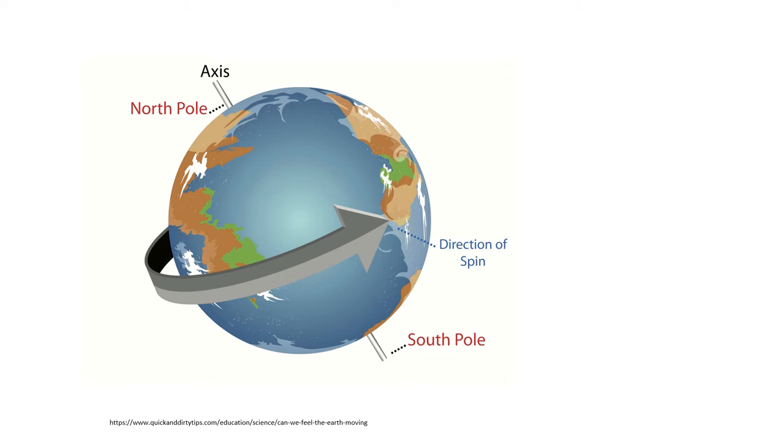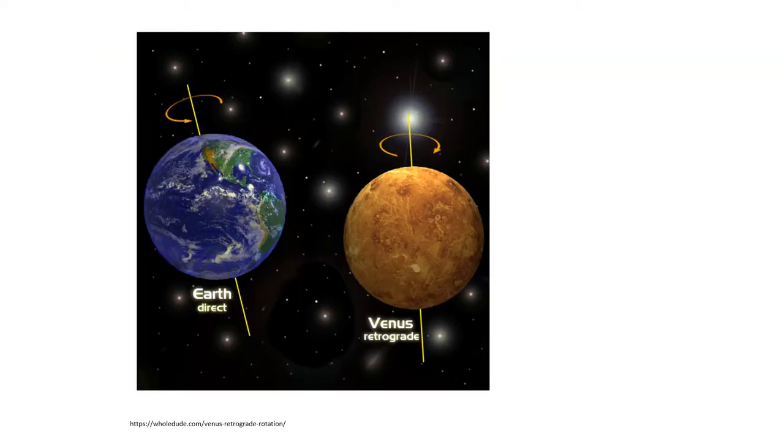Now, this is not a necessary thing. It just happens that the Earth is spinning in this way. Most of the planets in our solar system, in fact, spin this way in a counterclockwise fashion. But Venus, for example, has a retrograde spin. It spins clockwise when viewed from its North Pole rather than counterclockwise. And so, very interestingly, on Venus, the sun rises in the west and sets in the east.